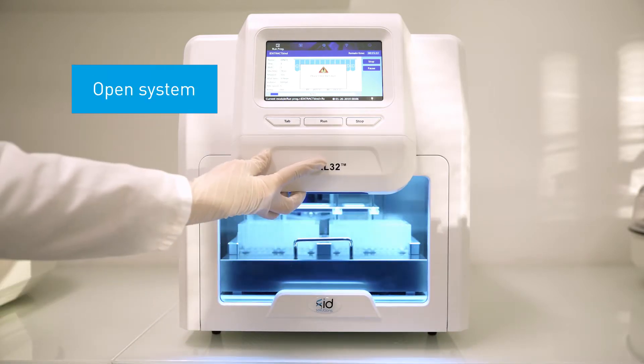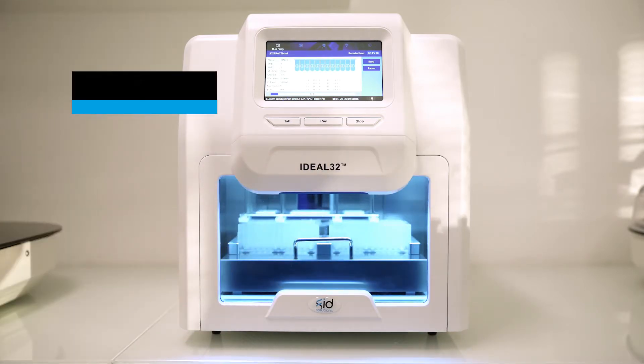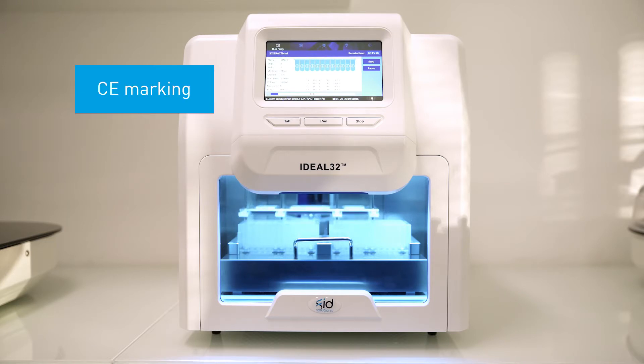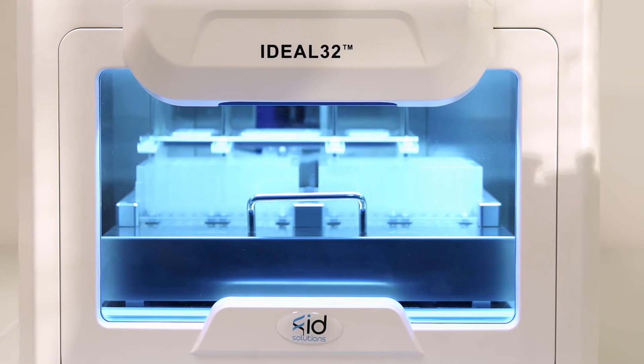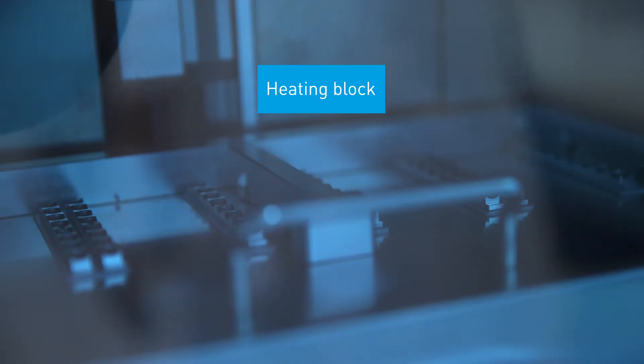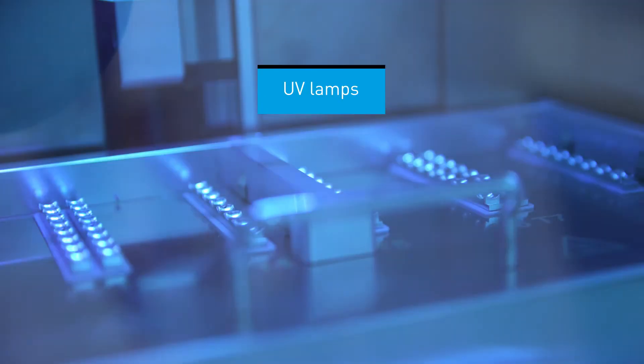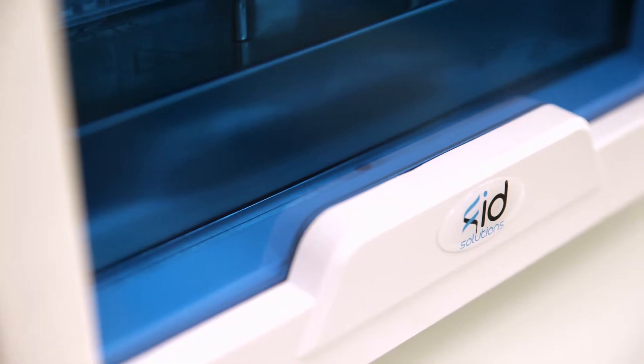The software is open with the possibility of simple programming and of course the machine is CE certified. The Ideal 32 robot has two additional options. A heating block may be used for the lysis and elution steps and UV lamps are included for decontamination.